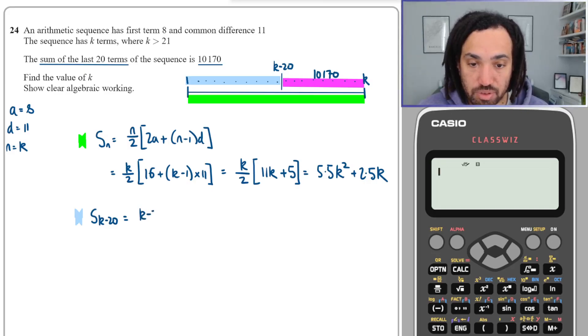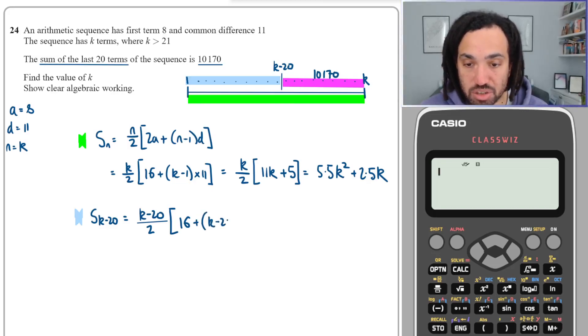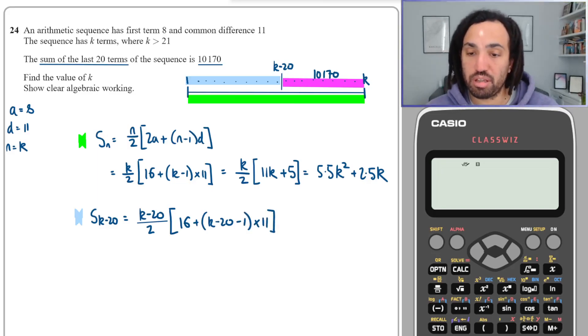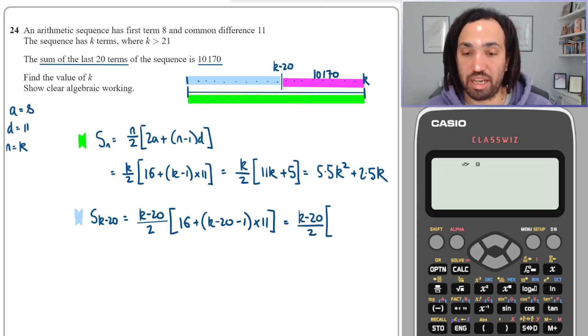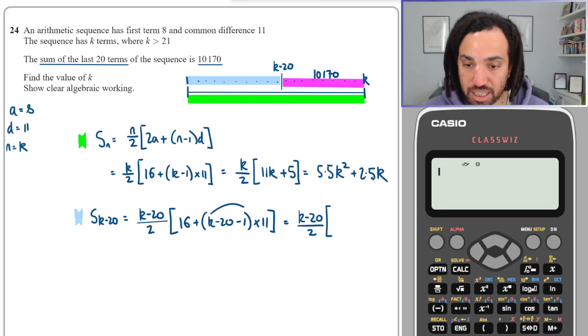So k minus 20 is going to be the position over 2, and then 2a again is 16. And then we're going to do plus k minus 20 minus 1, multiplied by d, which again is 11. Okay, so we can simplify this. I'll have k minus 20 over 2 still, but inside the bracket, what am I going to get? I'm going to get k times 11 again.